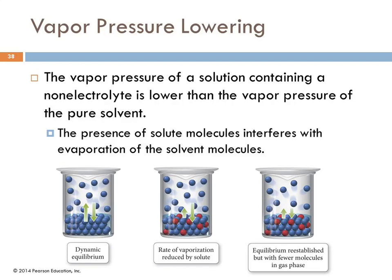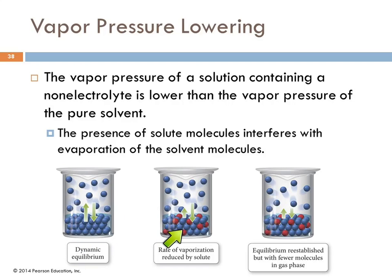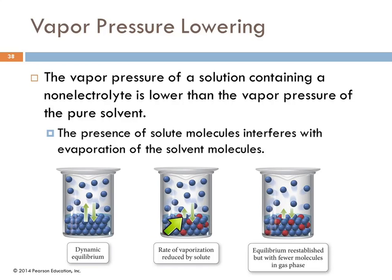Freezing point depression is a colligative property. Vapor pressure lowering is also a colligative property. The vapor pressure of a solution with a non-electrolyte in it is going to be lower than the vapor pressure of the pure solvent. The solute molecules get in the way of the solvent molecules. In order for the solvent molecules to evaporate, they have to be at the surface and moving toward it—the solute molecules are now blocking the way.